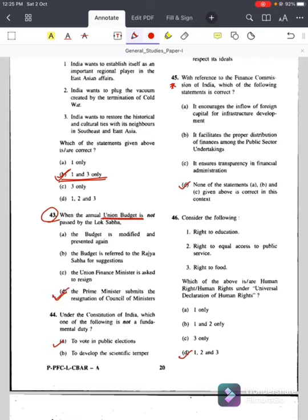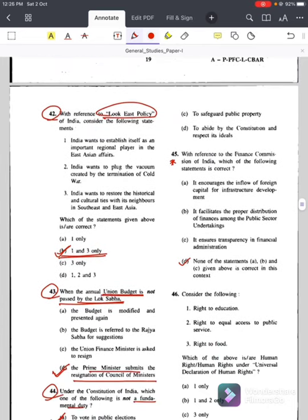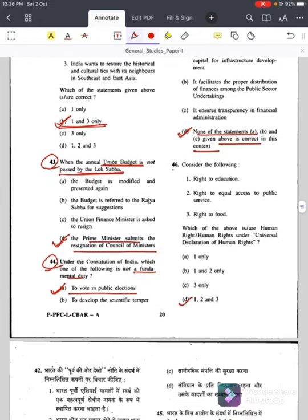Question number forty-one, Mahatma Gandhi National Rural Employment Scheme MGNREGA, answer is D, adult members of many household. Question number forty-two, look east policy, answer is B, one and three only. Question number forty-three, Union budget question, answer is D, the Prime Minister submits resignation of Council of Ministers when the annual Union budget is not passed by the Lok Sabha. Answer is D. Question number forty-four, fundamental duty, answer is A, to vote in public elections. Then again interesting question with respect to Finance Commission, question number forty-five, answer is D, none of the statements A, B, C given above is correct in this context.